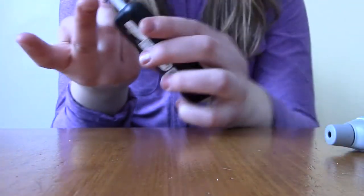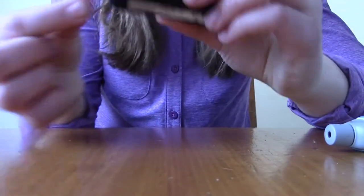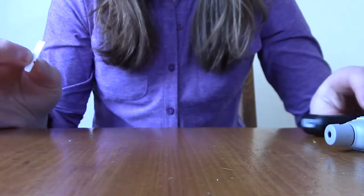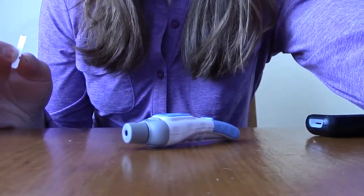Once you are done, all you have to do—I like to just wipe off the blood on the side of the strip—you just remove your strip and throw it in the garbage. And voila, you have checked your blood sugar levels! Hope that helped, guys.